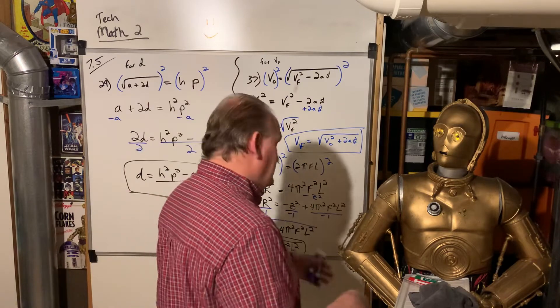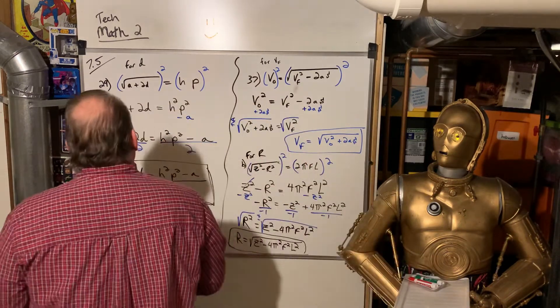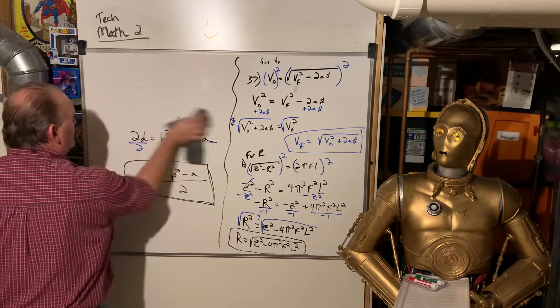So we have R is equal to the square root of Z squared minus 4 pi squared F squared L squared. And no, you cannot simplify anything inside of that square root sign because of that minus. If it was all being multiplied, then we could basically take everybody out of there. That was 7.5. Let's take a look at 7.6.